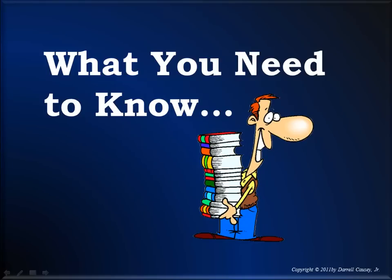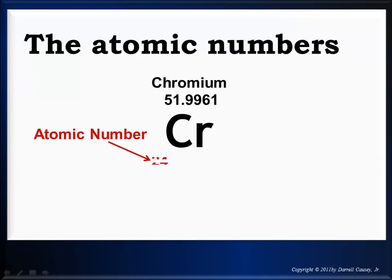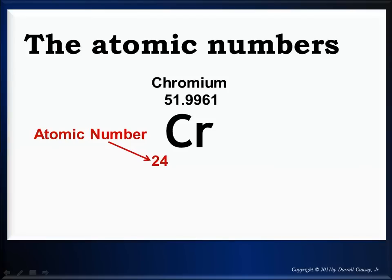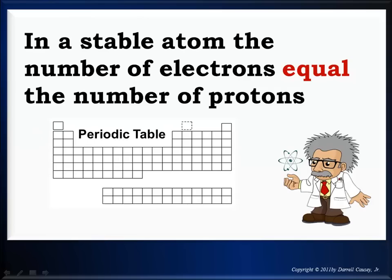Now in order to do electron configurations and orbital notations you need to know some certain things. So let's go through what you need to know. And first you need to know atomic numbers. And of course the atomic number is right there in red. You need to know that everything on the periodic table is a stable atom. So if you know the atomic number you know how many electrons are in the atom.